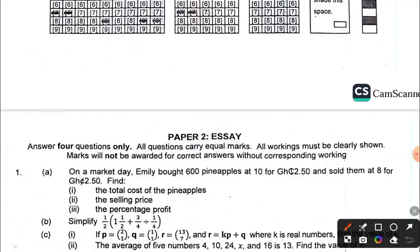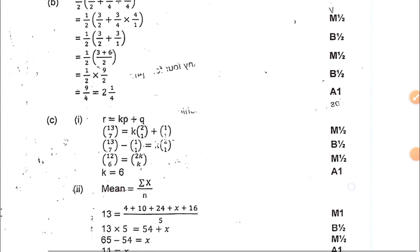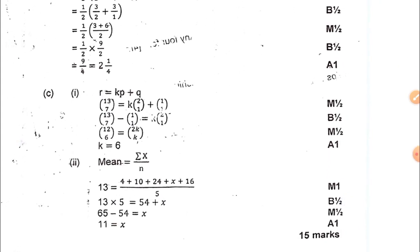Question one has to do with percentages, selling price, and percentage profits. Part A covers the total cost of the pineapples and selling price, then the percentage profits. Part B has to do with fractions where you have to use BODMAS. Part C has to do with vectors and then finding the mean.